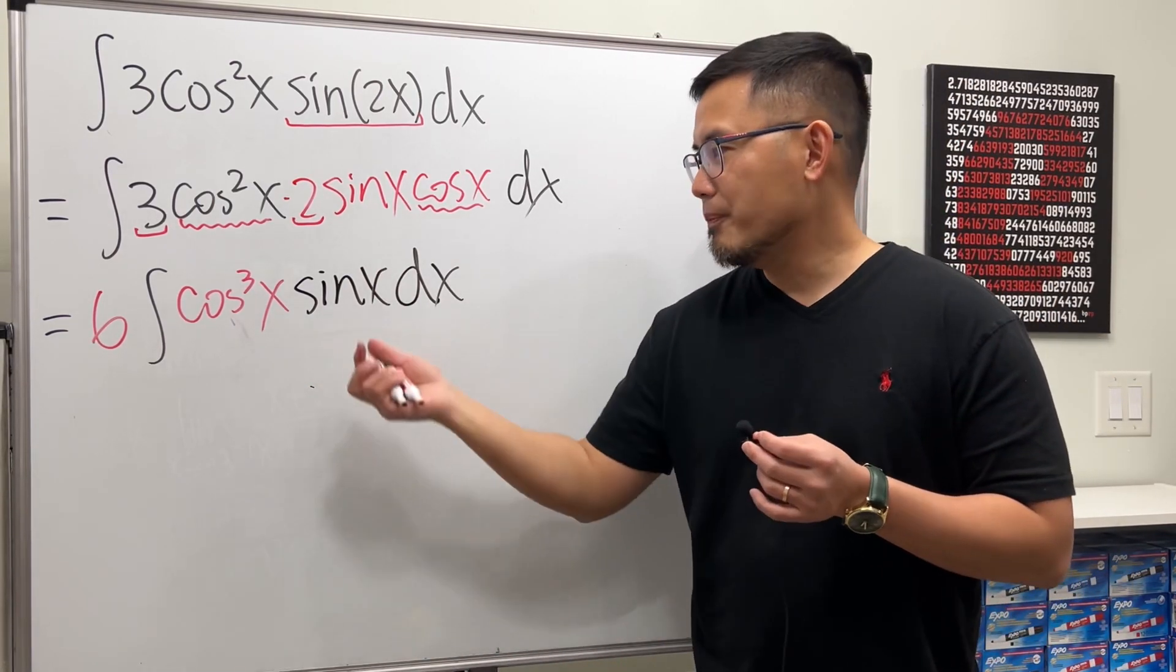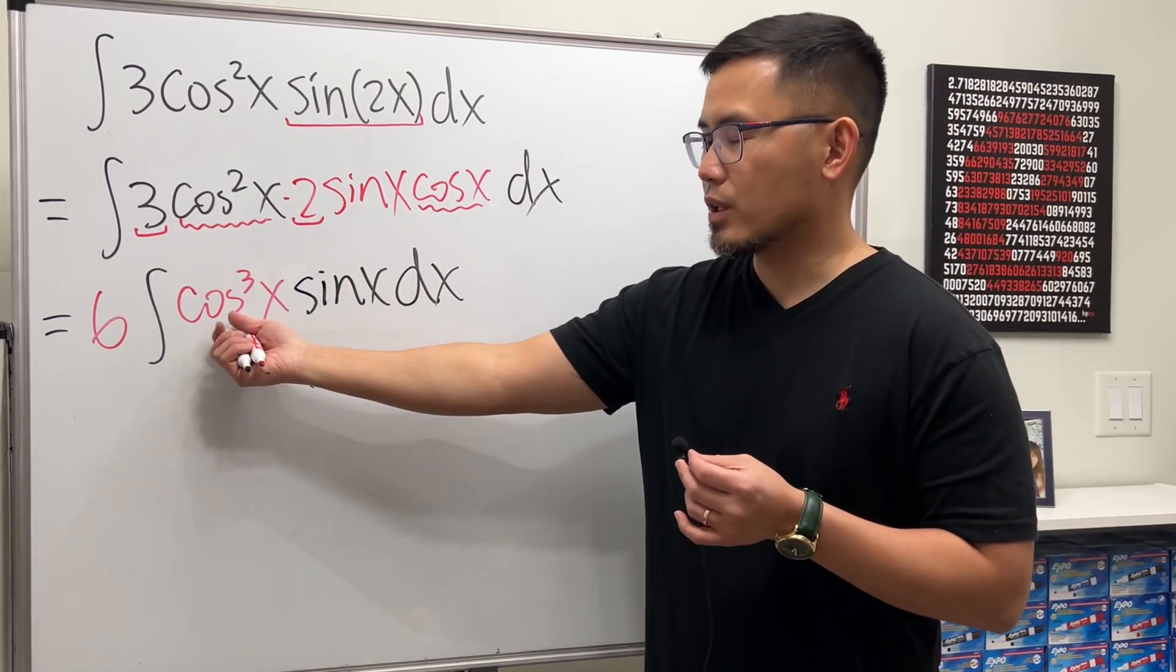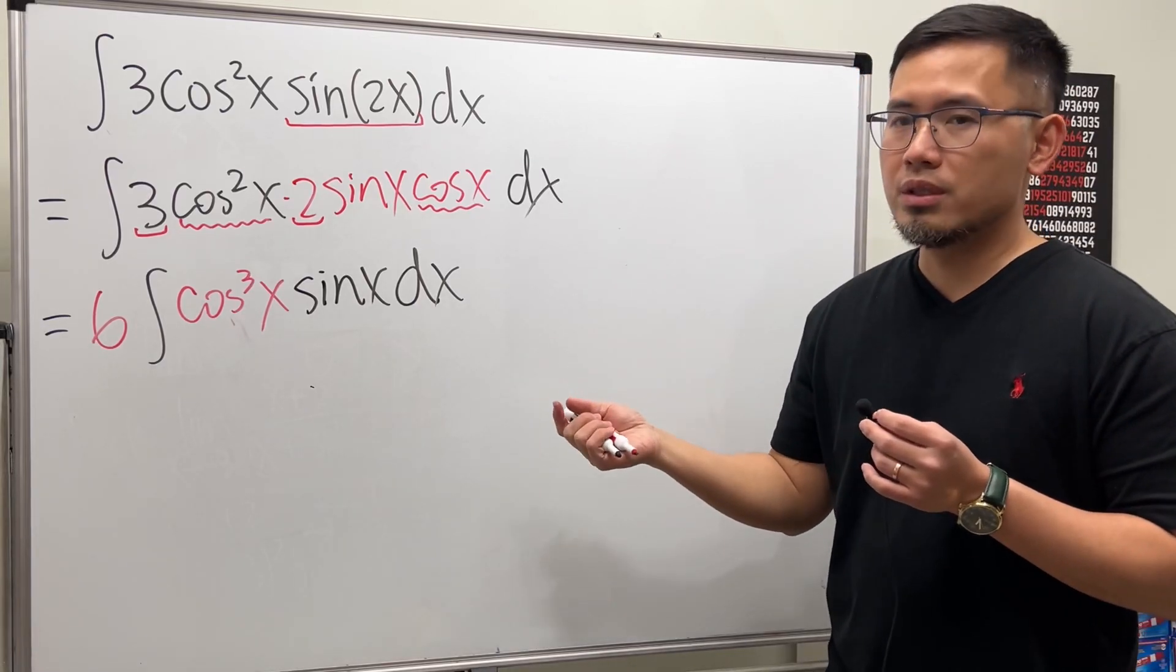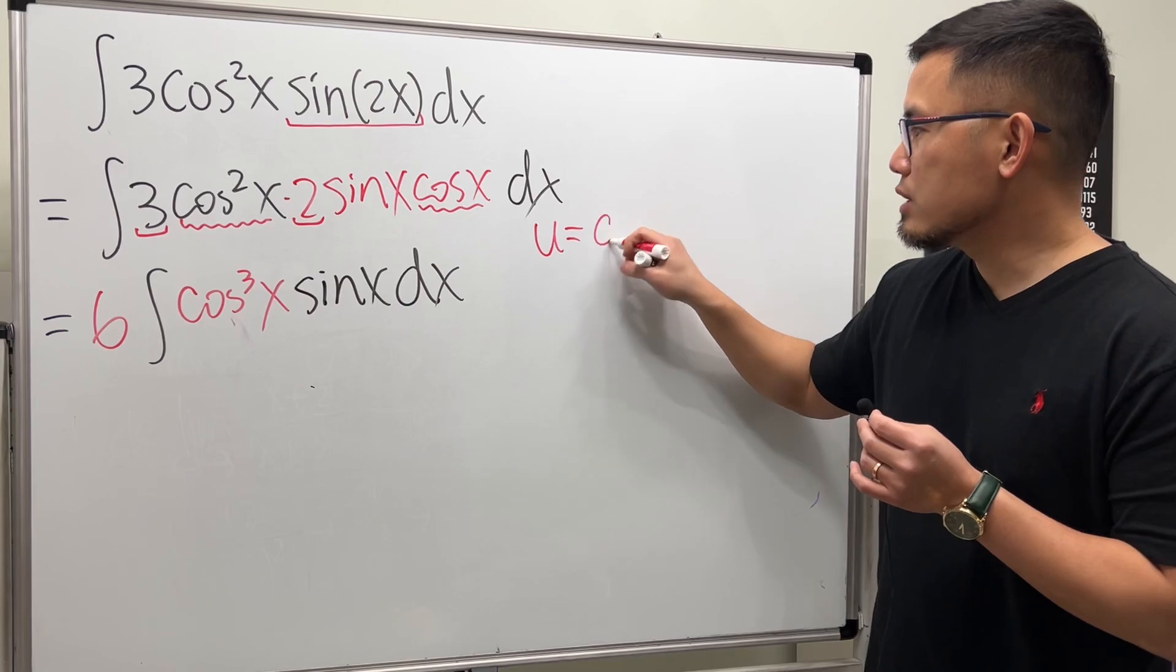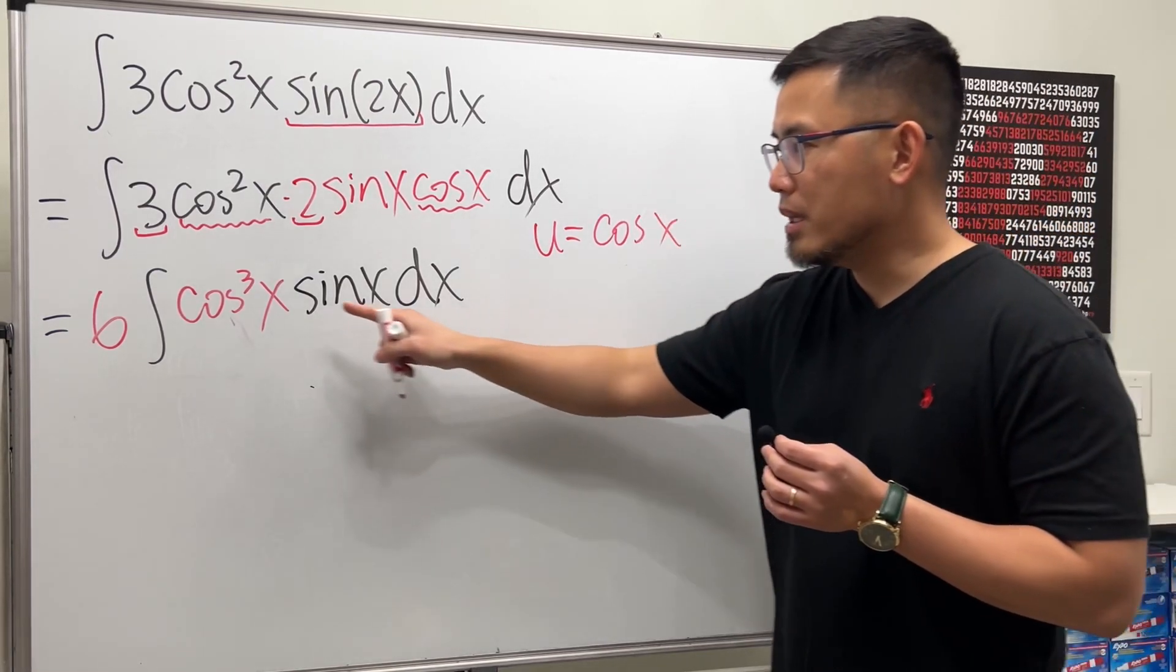Now as we can see, we have a sine factor on the outside and then here we have a cosine x to the third power, so we can just proceed by doing a u sub. I'm going to let u equal to just cosine x, and this is to the first power. Do not make it to the third power.